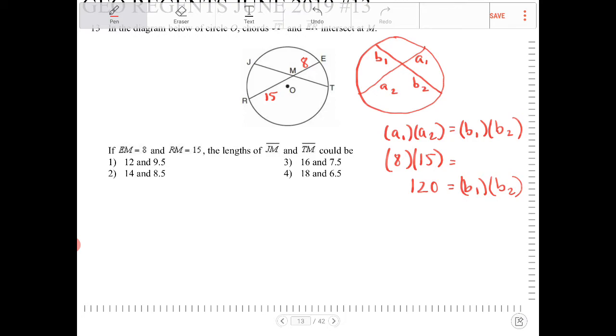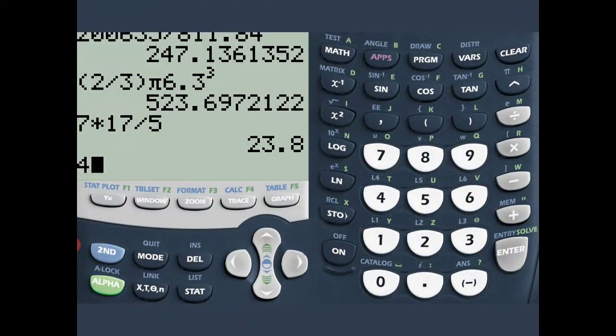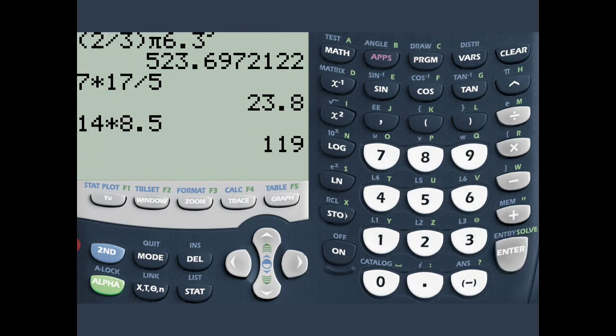8 times 14 gives us, it might be 14 times 8.5, just going by my number sense here. Let's take a look. 14 times 8.5. Is that it? Nope, that's close though.